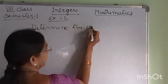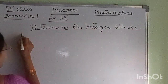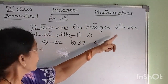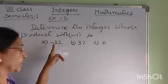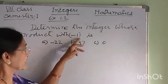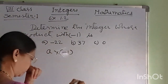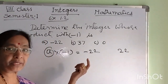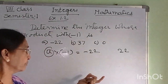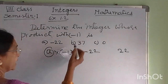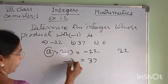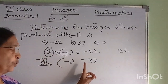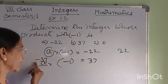Determine the integer whose product with minus 1 is: first, minus 22. When an integer multiplied by minus 1 gives minus 22, that integer is 22, because minus 1 times 22 gives minus 22. Next, 37: the product is 37 when multiplied by minus 1, therefore that integer is minus 37. We get the opposite sign.